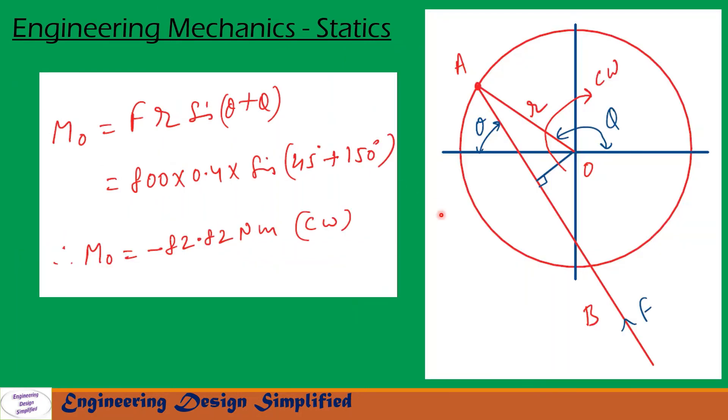Now let us see the second portion of the problem. Here F is given as 800 N, r is 0.4 m (same as before), theta is 45°, and phi is 150°. So the coupler link will assume this position drawn here. The angle from here to here is phi, and the angle between horizontal and the coupler link is theta.